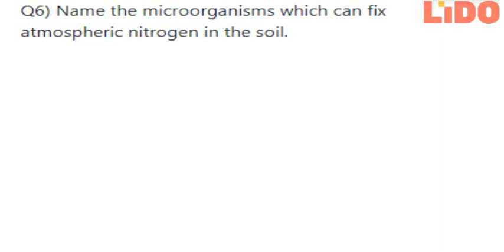So, dear friends, which organisms do you think would be able to fix the atmospheric nitrogen in the soil? Bacteria such as Rhizobium and certain blue-green algae can fix atmospheric nitrogen in the soil.